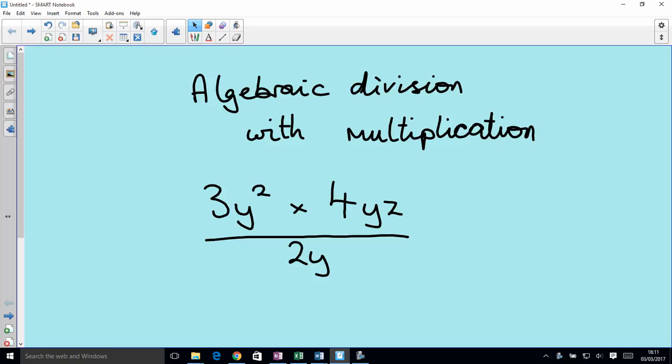3y squared times 4yz over 2y. If you've been following, you'll remember we keep talking about how division problems are synonymous with fractions and vice versa. So this problem really reads 3y squared times 4yz divided by 2y. How to address this question?